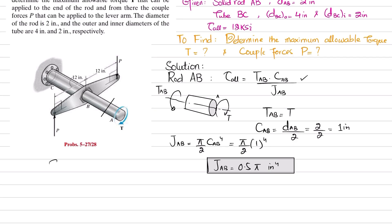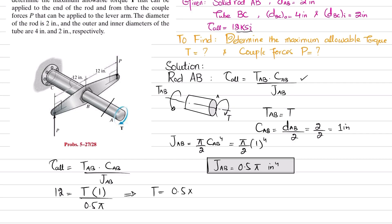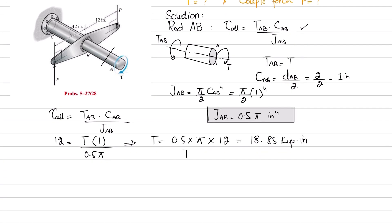Now putting all values into the formula: τ_allowable = T_AB · c_AB / J_AB. With τ_allowable = 12 ksi, T_AB = T, c_AB = 1, and J_AB = 0.5π, we get: 12 = T · 1 / (0.5π). Solving, T = 0.5π × 12, which equals 18.85 kip·inch.